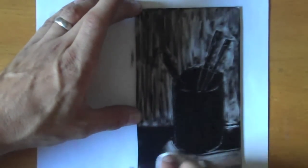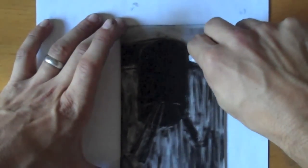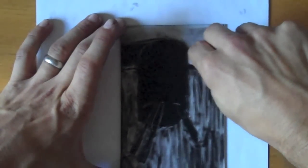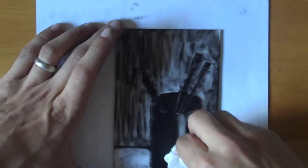I'm removing more ink on the ground plane, the table that is. I'm using rags to create some value contrast between the table and the background. Then I'll start to work up the can, the brushes, and the pencil.